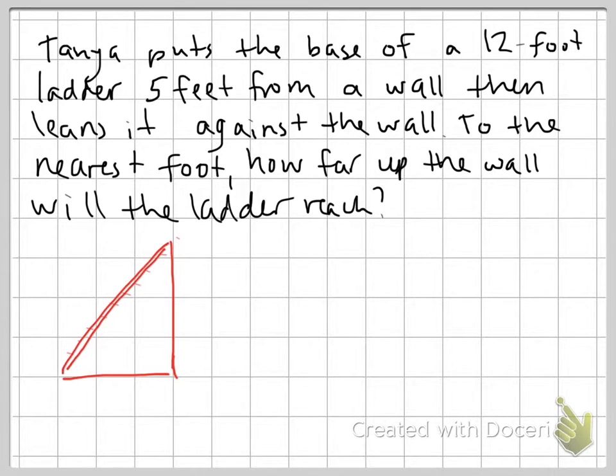Okay, so the first part of this question says that it's a 12-foot ladder. So the ladder itself, we're going to label that 12 feet. We know that it's 5 feet from the wall, so the distance from the wall down here on the ground is 5 feet.